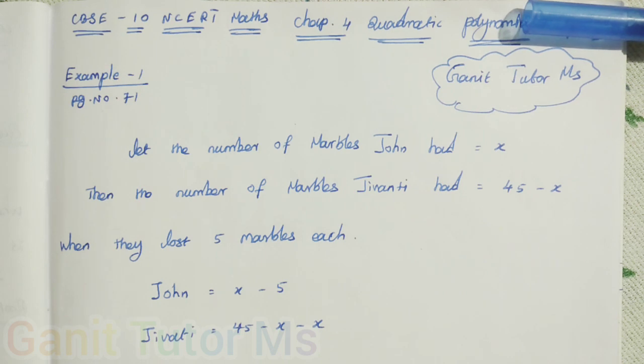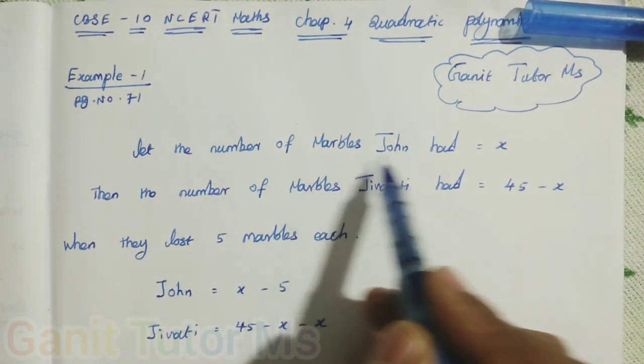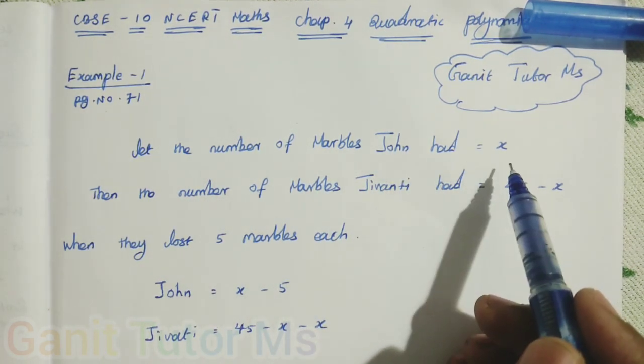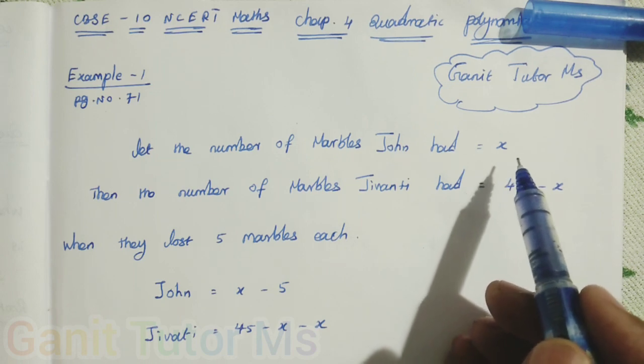John and Jivanti together have 45 marbles. We don't know how many marbles John have as well as Jivanti have. So let the number of marbles John had, that is x.